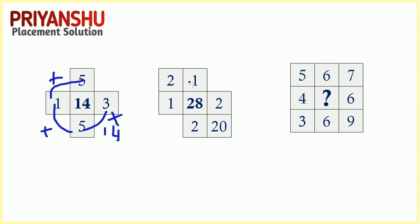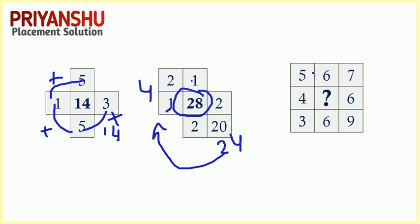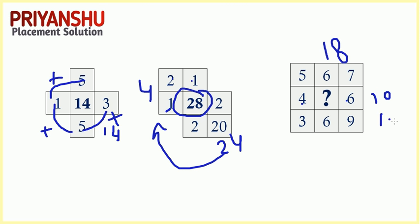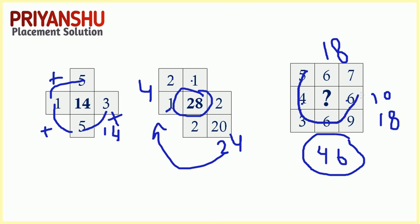Next: 2 plus 1 is 3, and 3 plus 1 is 4. Then 4 plus 24 is 28. Similarly, 5 plus 6 plus 7 is 18, and 4 plus 6 is 10, and 3 plus 6 is 15, plus 3 is 18. So 18 plus 18 is 36, and 36 plus 10 is 46. The answer is 46. You need to add all the outer values. I hope you got the logic.